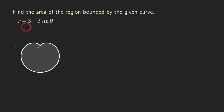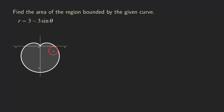We have a polar curve here: r equals 3 minus 3 sine theta, and that's a cardioid. We grab that cardioid right here and we are interested in finding the area bounded by the cardioid, which is the region that's inside the cardioid.